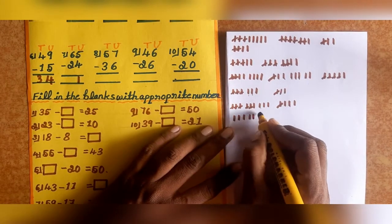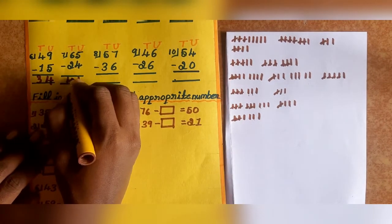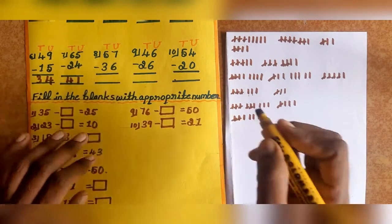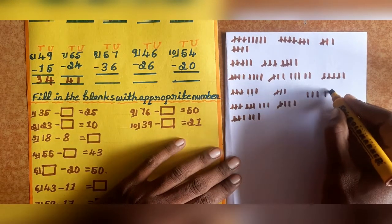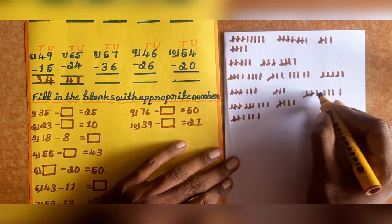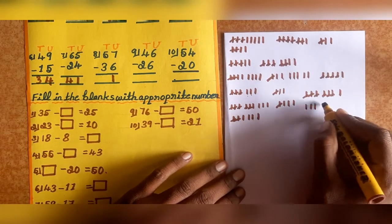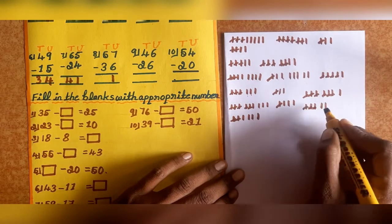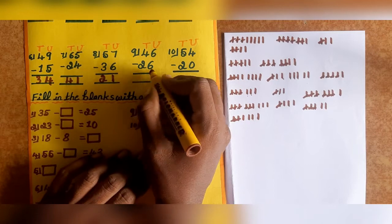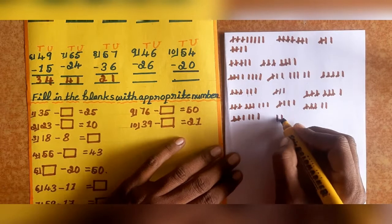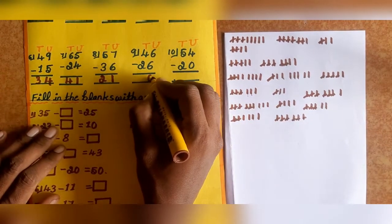Next, tens: 6 minus 2. Draw 6 lines, cancel 2. Balance is 4. Next problem — 6 minus 6, balance is 0.